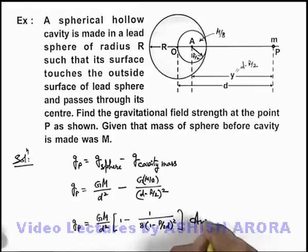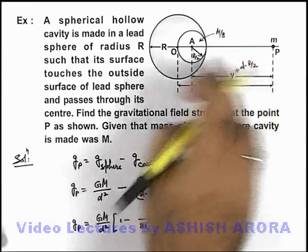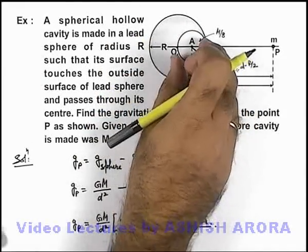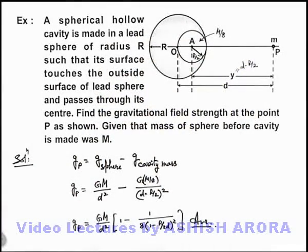This will be the answer to this problem, that is the gravitational field at point P due to the sphere with a cavity of radius R by 2.